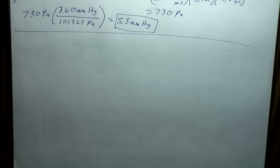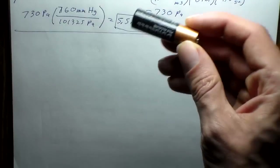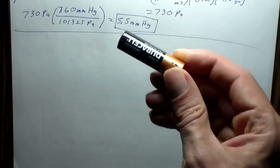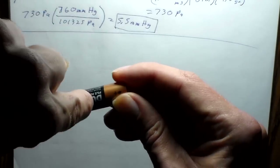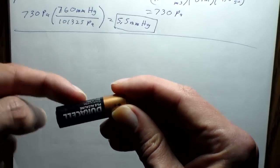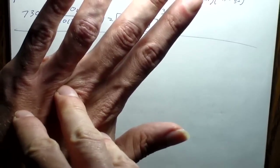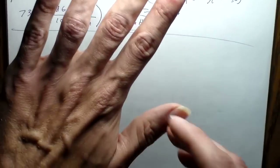One other thing about pressure: it's always perpendicular to the surface. For instance, the air pressure pushing on a battery pushes perpendicular to every single surface — this way, that way, every direction. On my hands, it's pushing perpendicular to every little part. The pressure is equivalent on both sides, ignoring small height differences — it just pushes perpendicular to the surface.